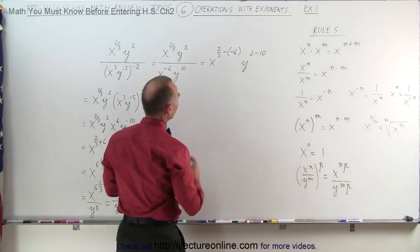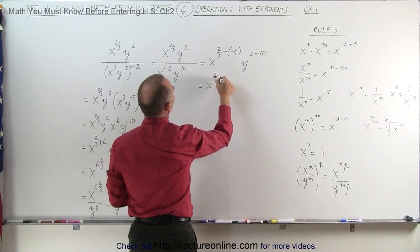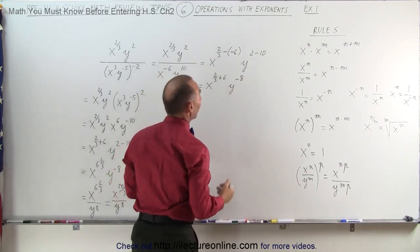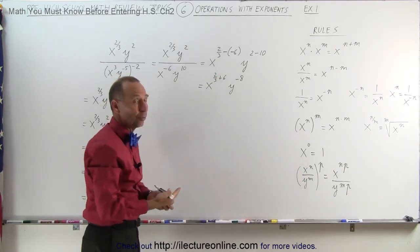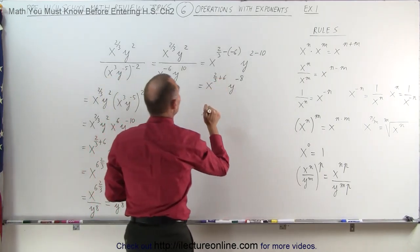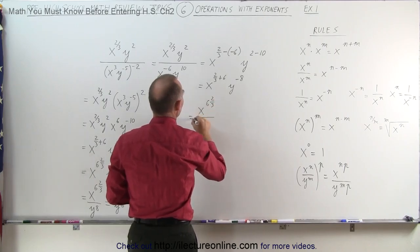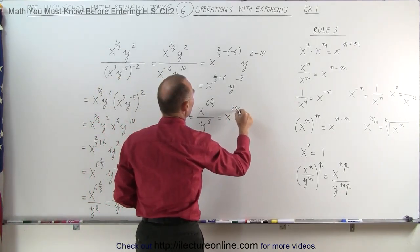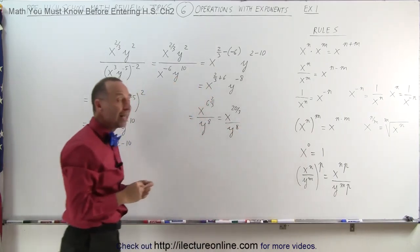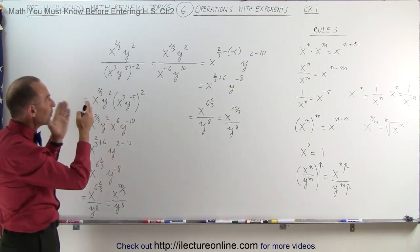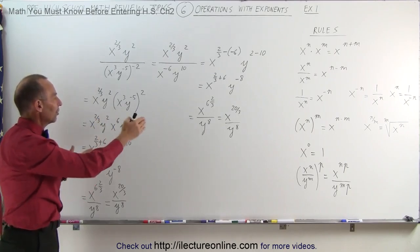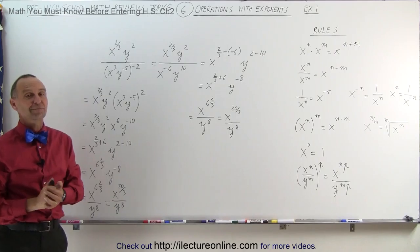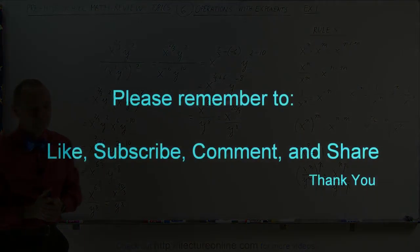So this can be simplified as follows: x to the two-thirds minus a minus 6 — I'm subtracting the exponent from below — and y raised to the 2 minus 10 power. Simplifying, this is x to the two-thirds plus 6 power and y to the minus 8 power. Again I can move y to the minus 8 to the denominator to turn it into a positive exponent, and combining the x terms, this becomes x to the 6 and two-thirds power divided by y to the 8 power — which again could be written as x to the 20 over 3 power divided by y to the 8 power. You can see that as long as you utilize the rules properly, the order doesn't matter as much and you can get to the very same answer in various ways.